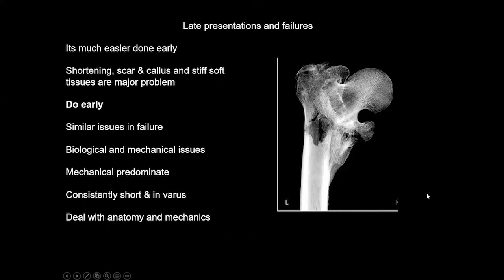It's much easier to do these surgeries early. I'd expect to do them within 24 hours, and I appreciate that's difficult in many environments. The earlier you do them, the less deformity and shortening there is, less development of callus, less to take down, and a smaller operation requiring fewer resources and equipment. If you delay: shortening, scar, callus, and stiffness are a major problem. Do them early — it's the same issue for every fracture. If they're delayed, it's the same issue as failure. There are biological and mechanical issues because of the shape of the femur, the collapse and the mechanical forces. It's consistently short and consistently in varus for both of these processes. You have to deal with the anatomy, get them together, and deal with the mechanics.